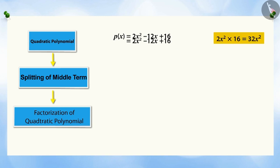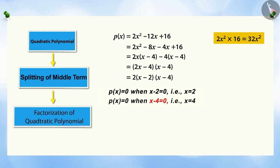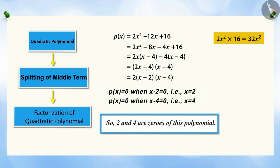On further solving, we get the factors of this polynomial. Therefore, for X minus 2 equals 0, that is X equals 2, or X minus 4 equals 0, that is X equals 4, the value of the polynomial will be 0. So 2 and 4 will be the zeros of this polynomial, PX.